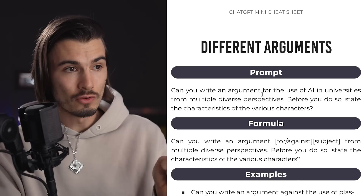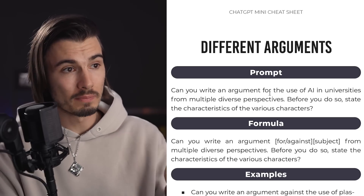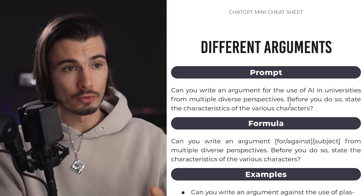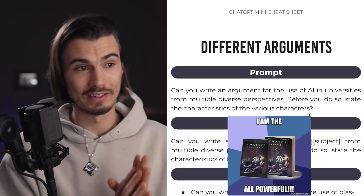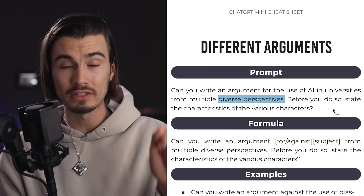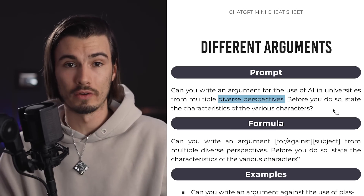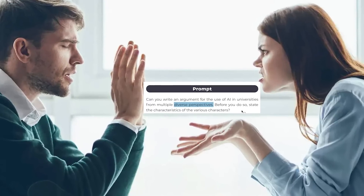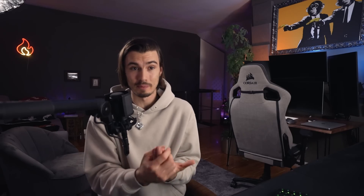This is one of my favorites — 'Different Arguments' in the writing chapter. The prompt is: 'Can you write an argument for the use of AI in universities from multiple diverse perspectives? Before you do so, state the characteristics of the various characters.' The keyword 'diverse perspectives' prompts ChatGPT to take various viewpoints and express each one. This is one of the best ways to prepare for an argument or a heated discussion, because in advance you can start understanding and thinking of counter-arguments.